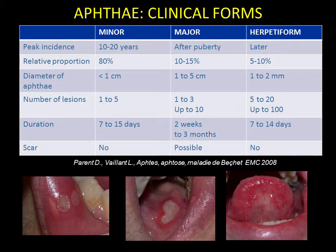Finally, herpetiform aphthae are small, deriving their name from their resemblance to herpetic ulcers. Generally, there are numerous herpetiform aphthae and they heal in around one week.